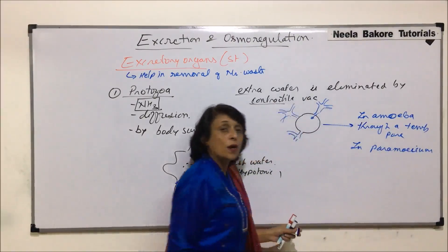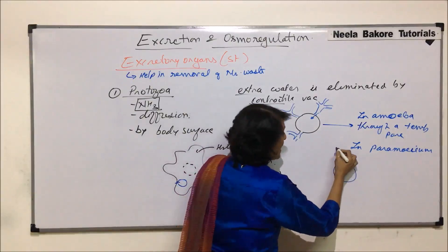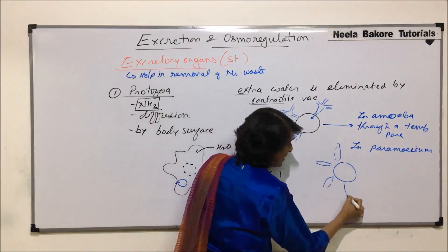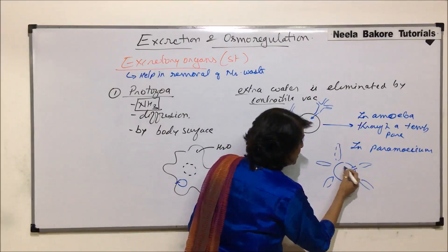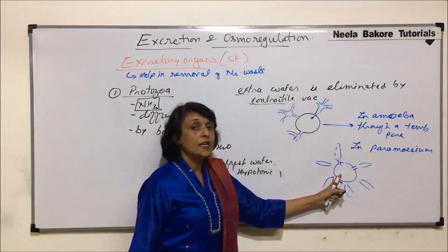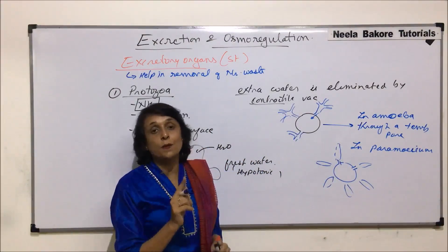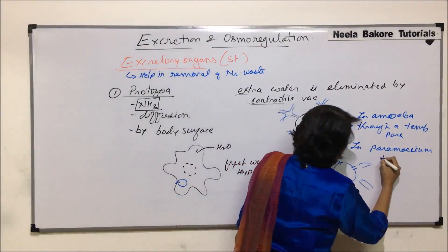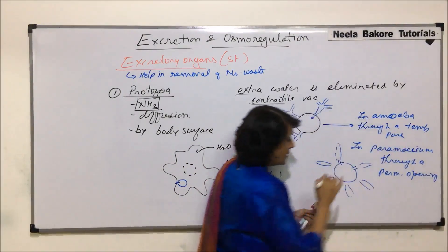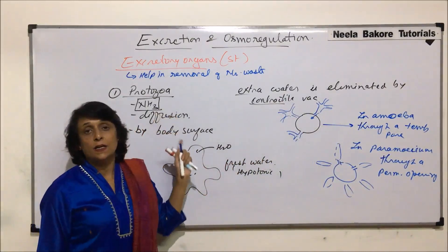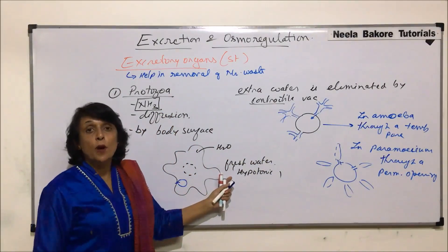In paramecium, the contractile vacuole shape is slightly different. There is a central large vacuole with many radiating vacuoles around it. Their function is the same — they collect extra water from the surroundings and dump it into the central vacuole. In paramecium, the main central contractile vacuole opens out through a permanent opening.